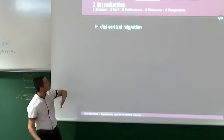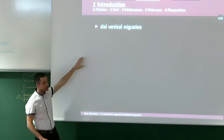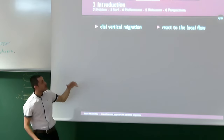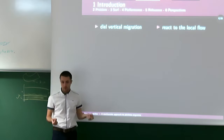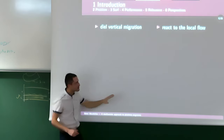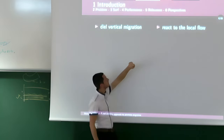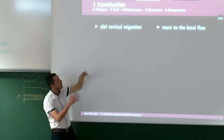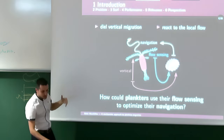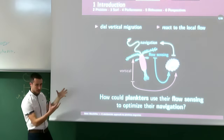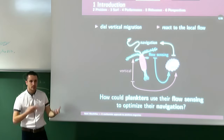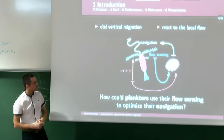We noticed that copepods perform diel vertical migrations and can react to local flow. The question we are interested in is: can they use flow information to optimize their navigation through the water column in the context of vertical migrations? That is the scientific question we'll try to answer throughout this presentation.